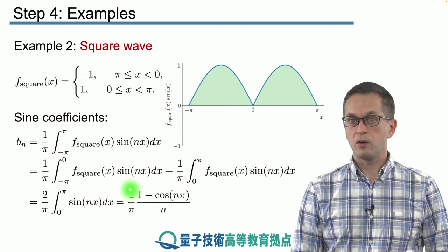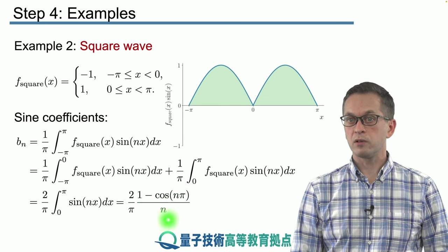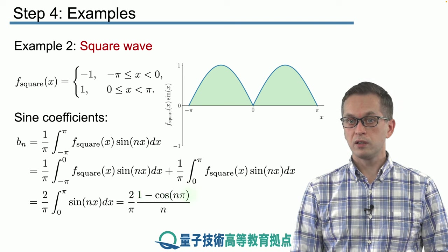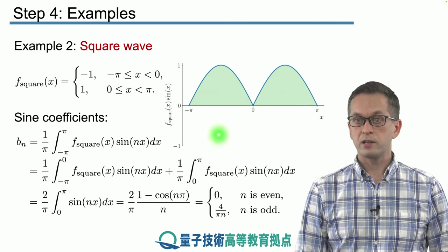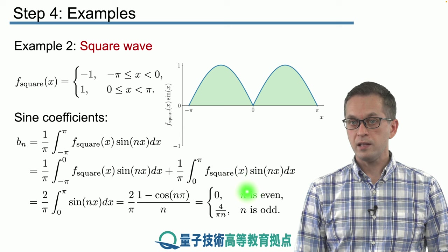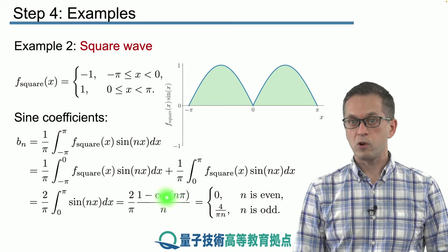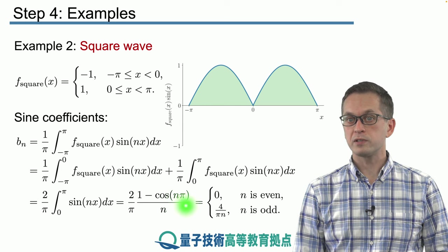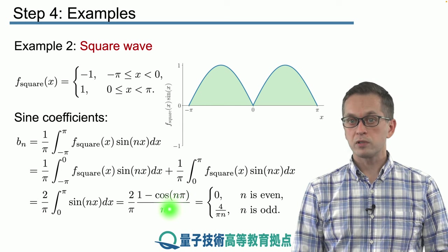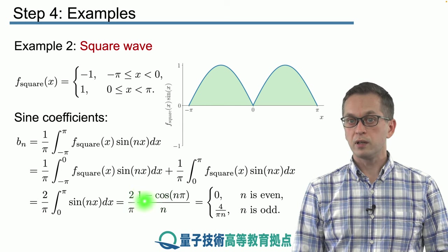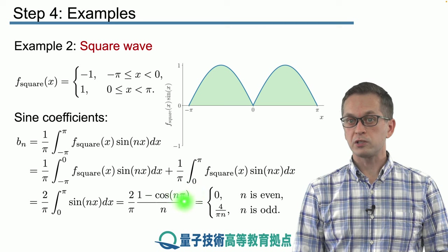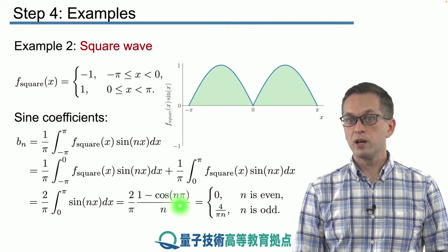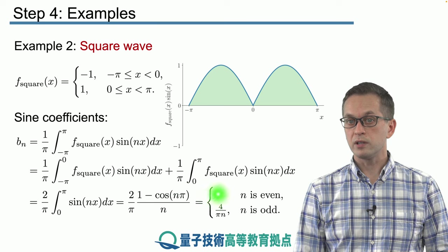Now what is this expression for different values of n? Let's consider when n is even. When n is even, we see that we have cosine of 2π, cosine of 4π, cosine of 6π. All of those equal to 1. Meaning this expression, 1 minus 1 is 0. Therefore this entire integral is equal to 0.